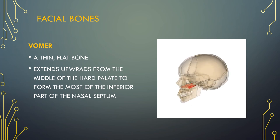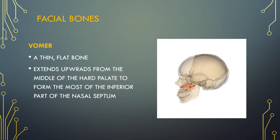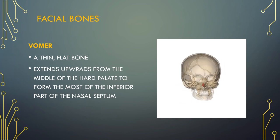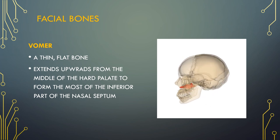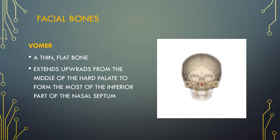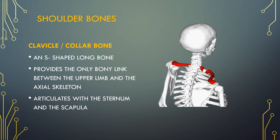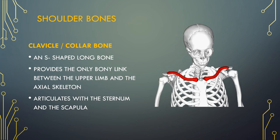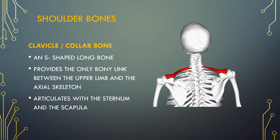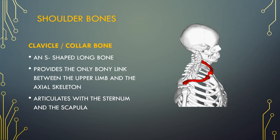The vomer is a thin, flat bone. The vomer's main job is to help support the structure of the nasal passages and face. This bone, along with a band of nasal cartilage, skin and blood vessels, divides the nasal respiratory cavity in two. The clavicle, also known as the collarbone, is an S-shaped long bone. It provides the only bony link between the upper limbs and the axial skeleton, and articulates with the sternum and the scapula.